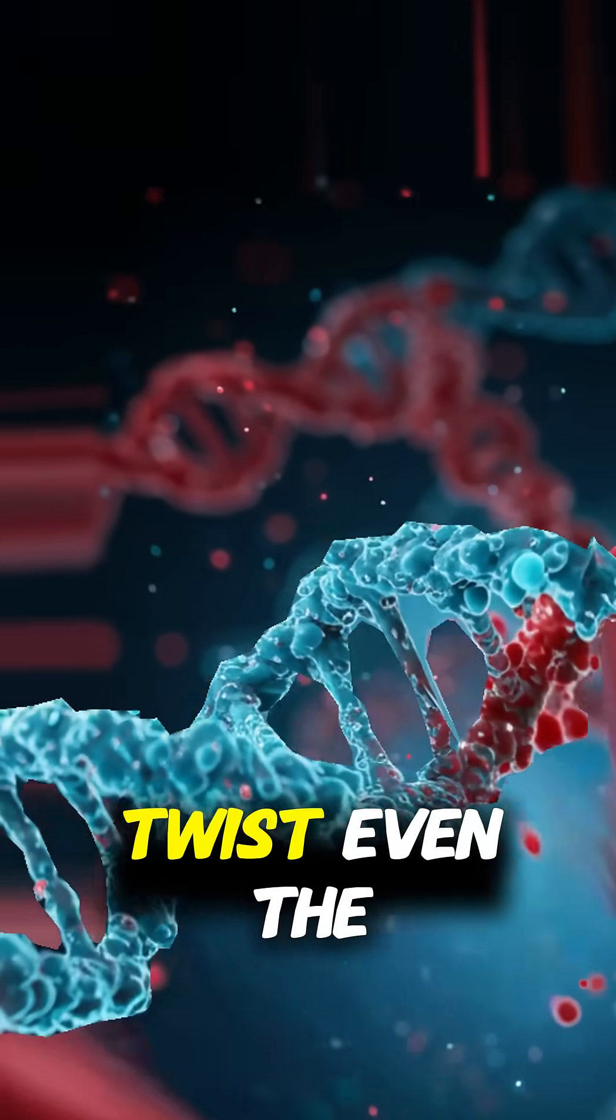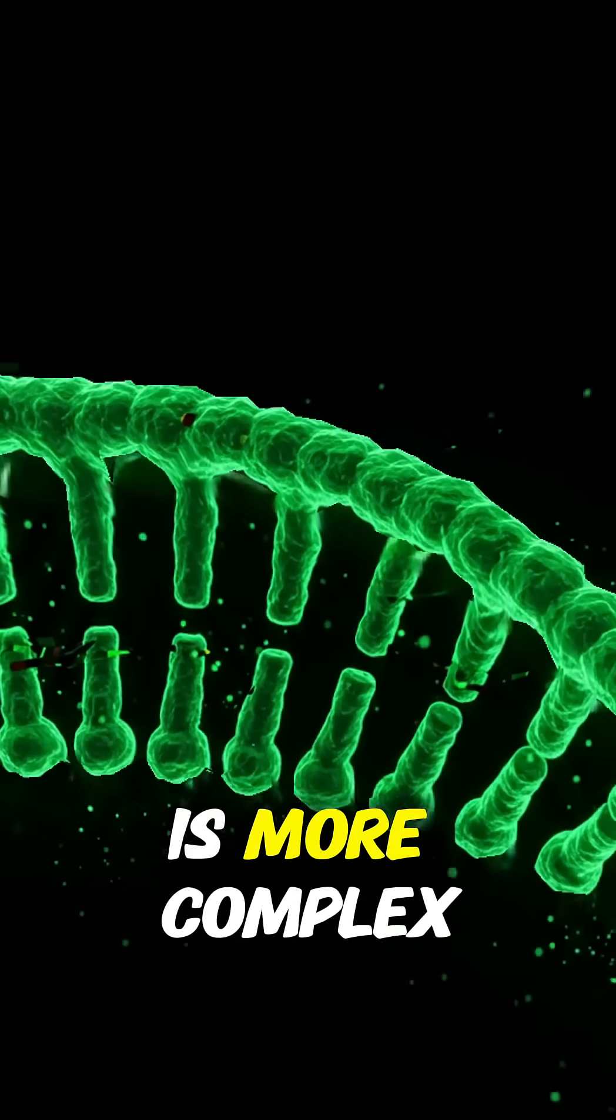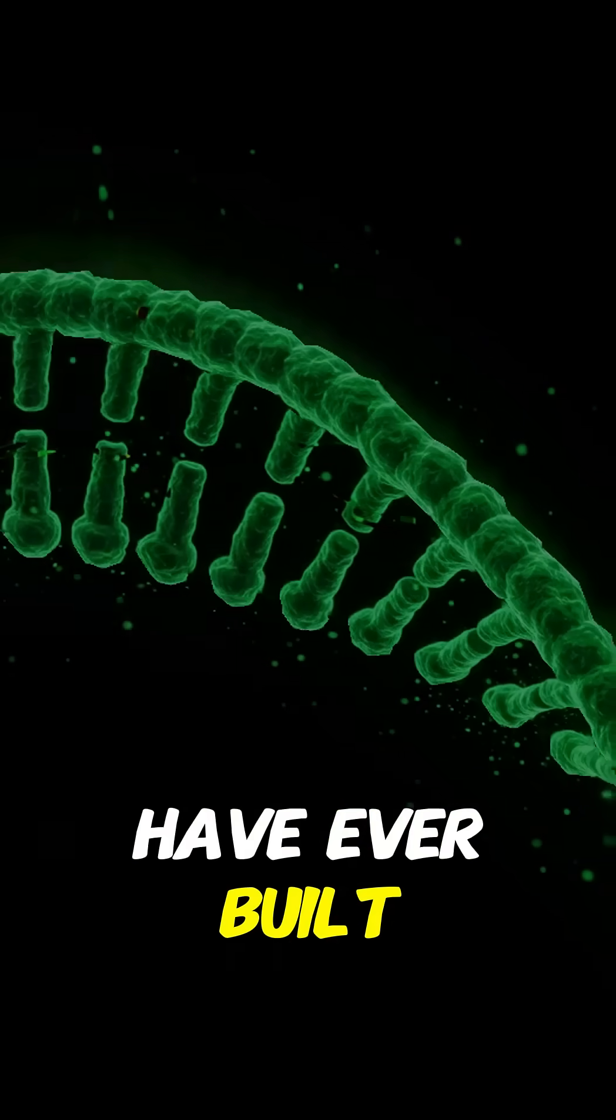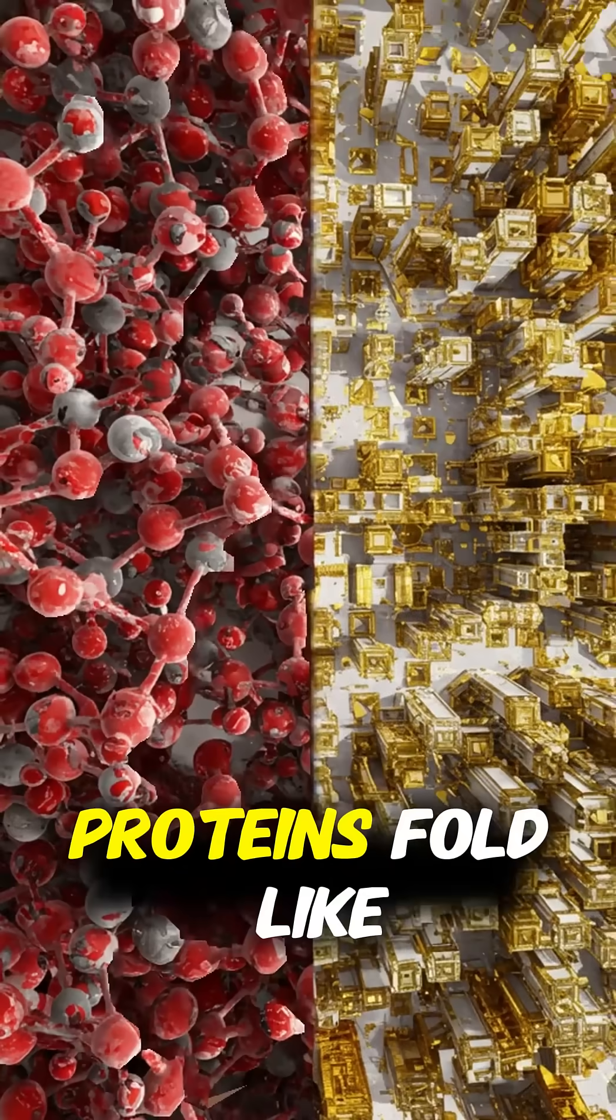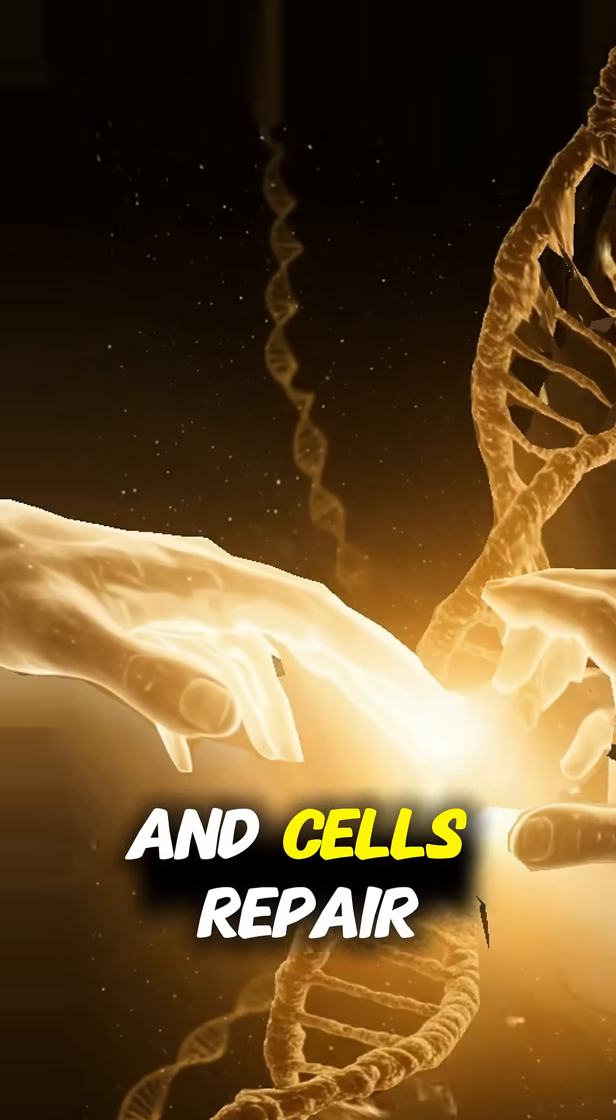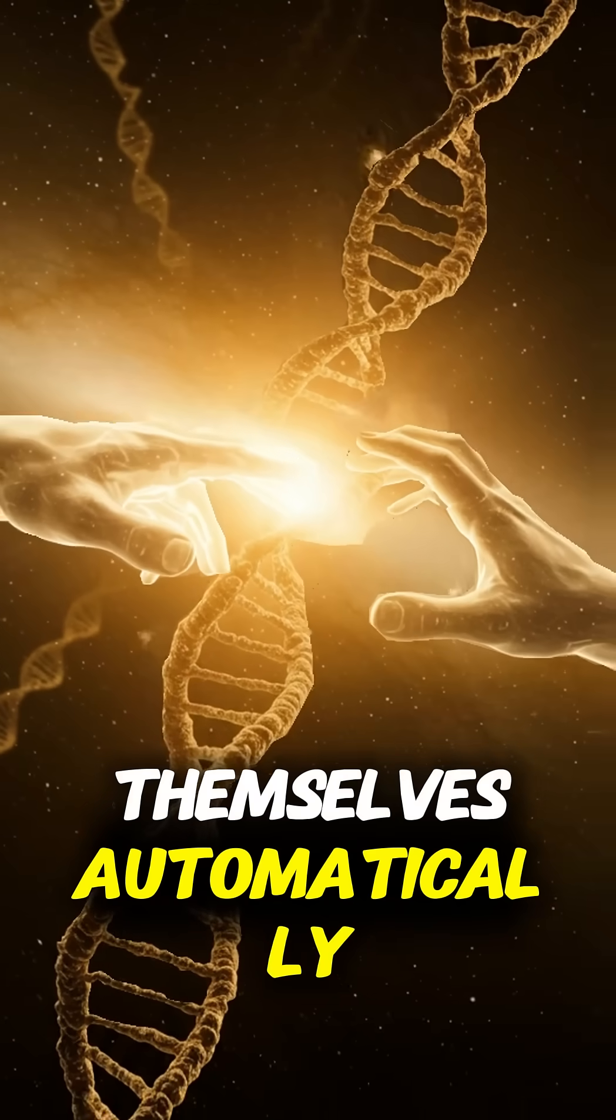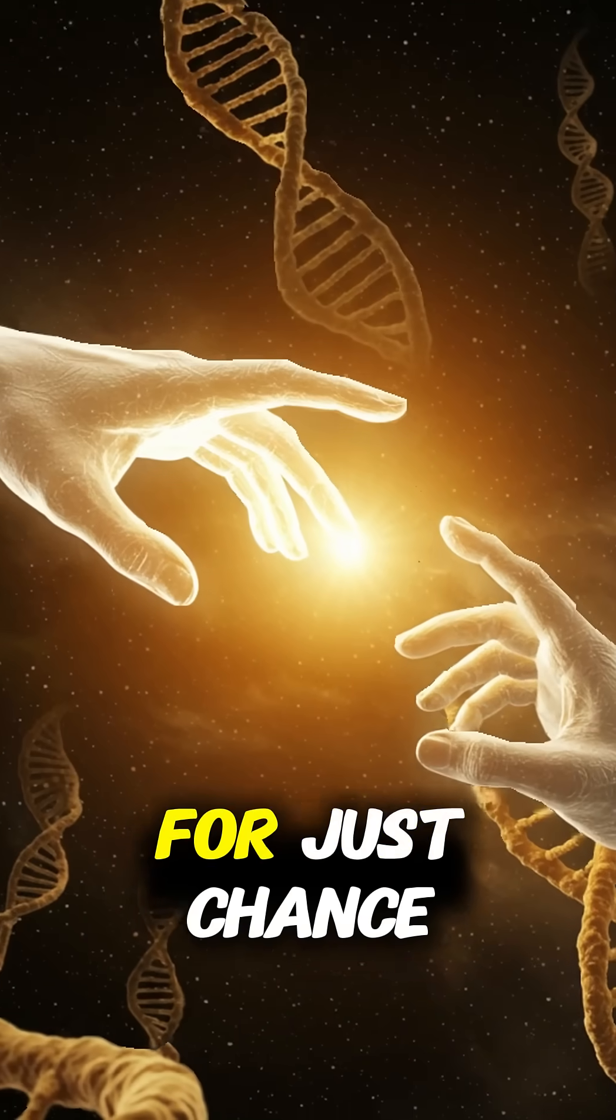But here's the twist. Even the simplest living cell is more complex than anything humans have ever built. DNA stores coded instructions, proteins fold like origami, and cells repair themselves. Automatically. Too much order for just chance?